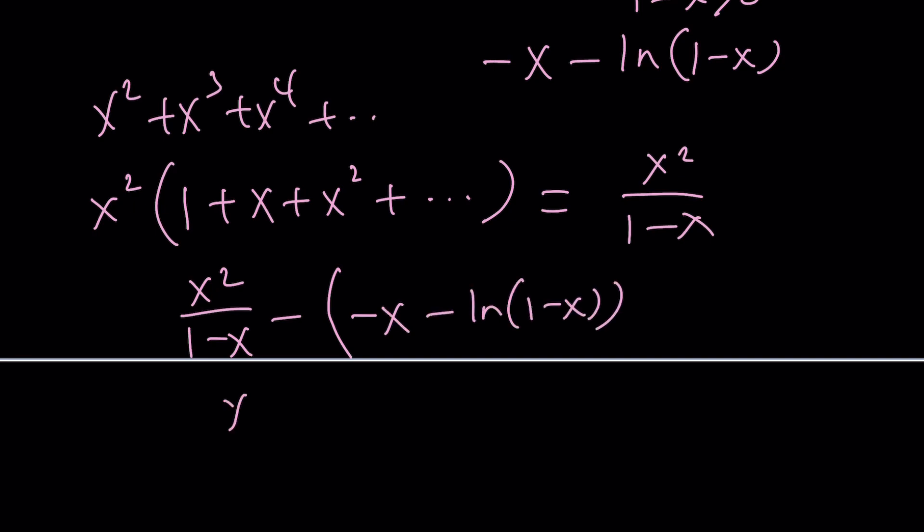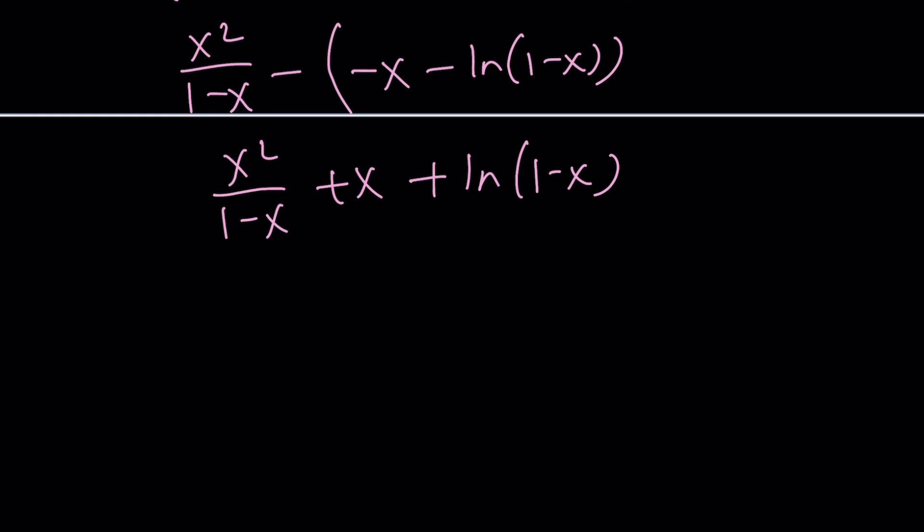And then you can kind of make a common denominator here, right? And then this should be plus ln 1 minus x, I think, if I'm not mistaken. And then you can make a common denominator, x squared plus x minus x squared, divide by 1 minus x, uh-oh, x squared cancels out.